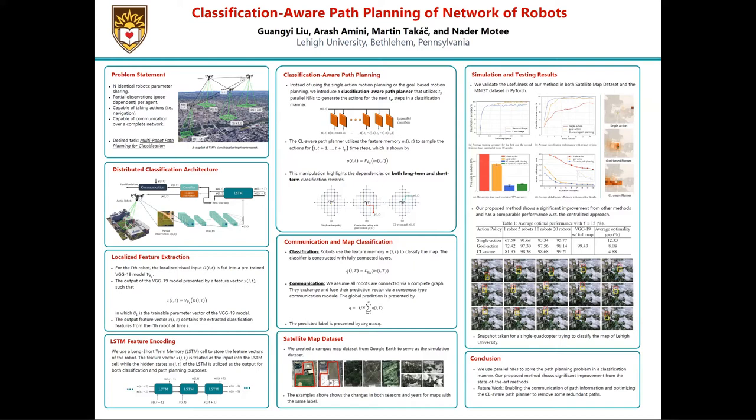The classification-aware path planner utilizes the feature memory vector M_iT to sample the actions from time step T to time step T plus T_p. This kind of manipulation highlights dependencies on both long-term and short-term. As shown in the picture, building either a single-action policy or using a goal-based action policy can only highlight dependence on either long-term or short-term. But by using our proposed classification-aware path planner, we can highlight dependencies on both.